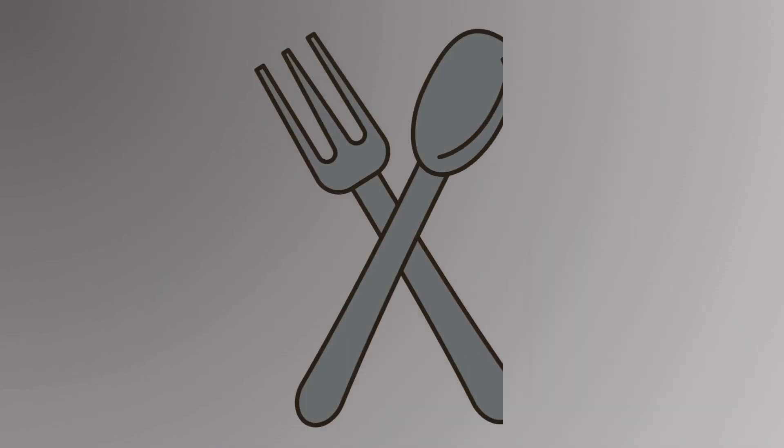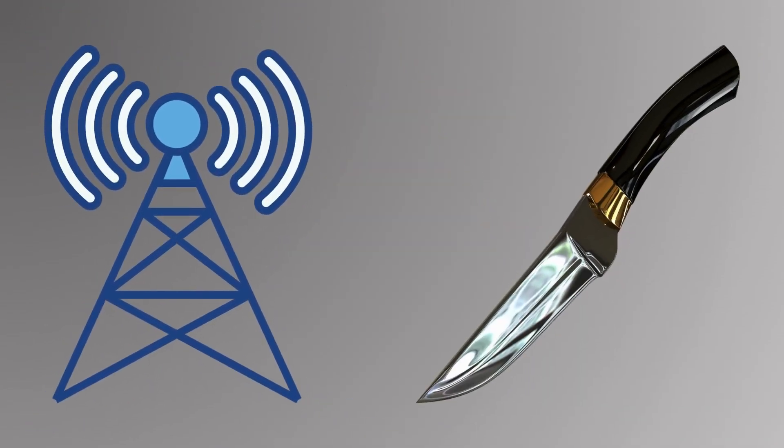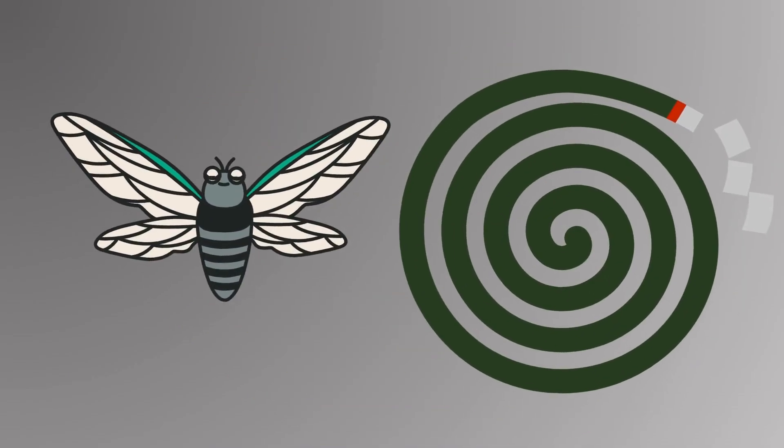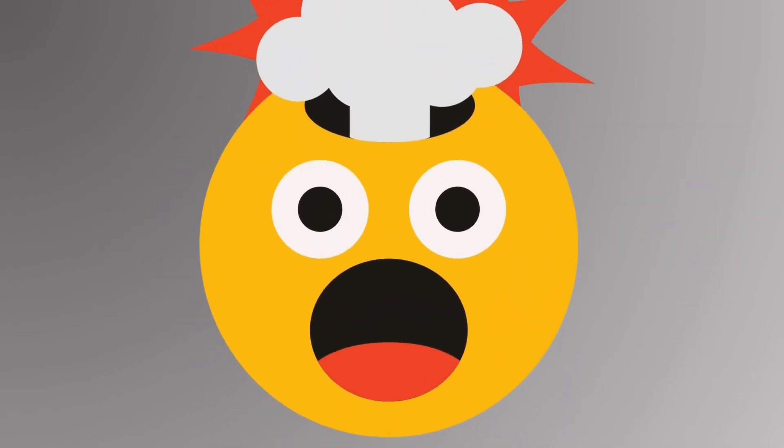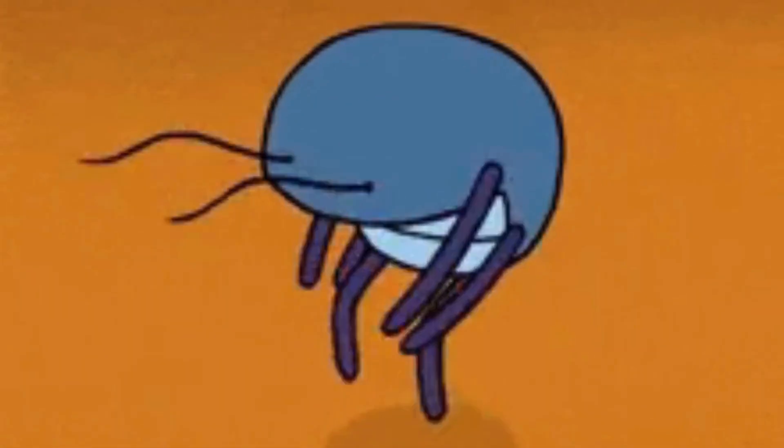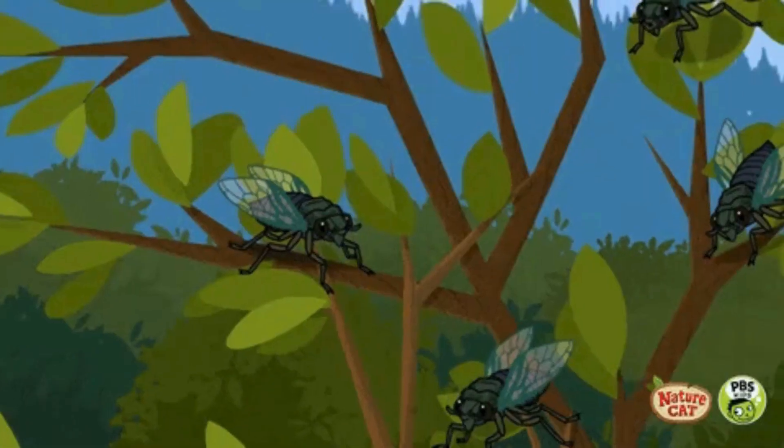In summary, bugs approach humans when they detect food, moisture, or chemical signals that align with survival needs and avoid humans when they sense danger or deterrence. So with this context in mind, a new question forms.